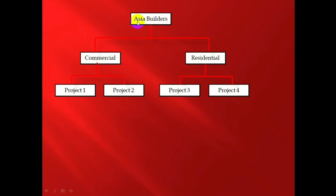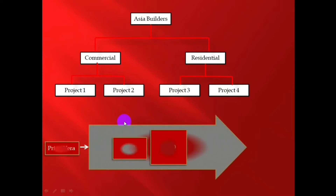At the top there is Asia Builder. Asia Builder has two types of projects: residential projects and commercial projects. Under commercial there are different projects like Project 1 and Project 2, and under residential there are different projects like Project 3 and Project 4. This structure is called EPS.